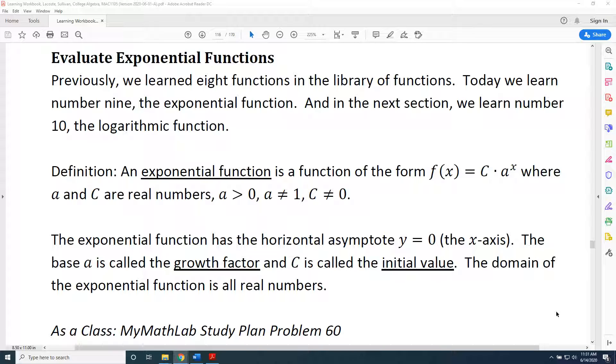The exponential function has the horizontal asymptote y = 0, which is the x-axis. The base a is called the growth factor, and C is called the initial value.